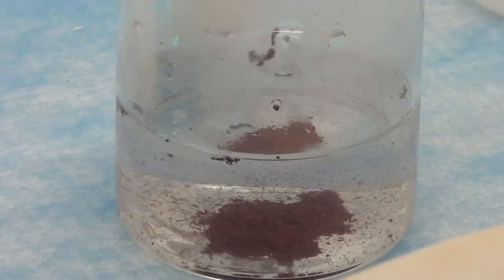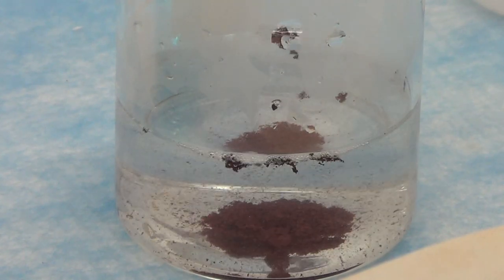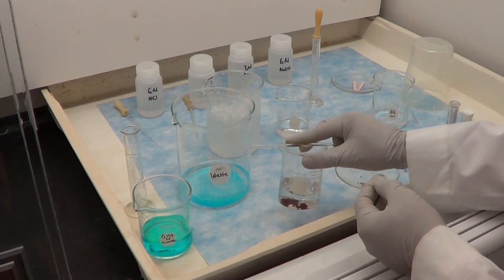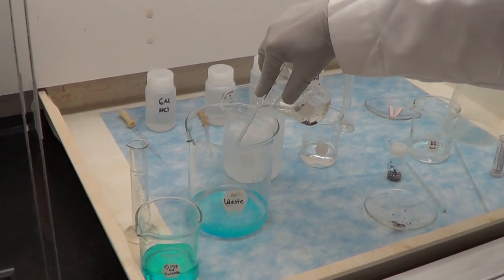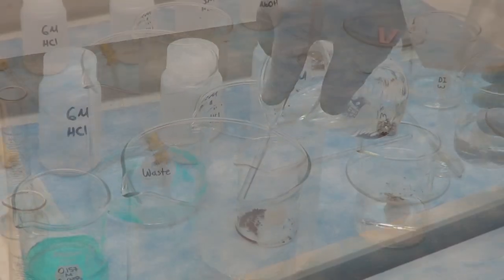Once the reaction is complete, we added six molar HCl to remove the excess magnesium. We then decanted the liquid to the waste beaker, washed with acetone and allowed the precipitate to dry.